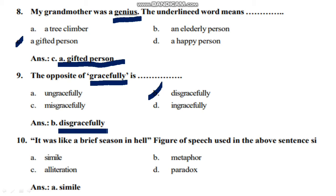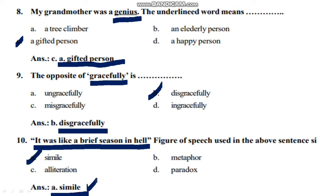Question 10: 'It was like a brief season in hell' — what figure of speech is used in the above sentence? Options are: Simile, Metaphor, Alliteration, Paradox. Because the sentence uses the word 'like,' the figure of speech here is Simile. Simile is the right answer.